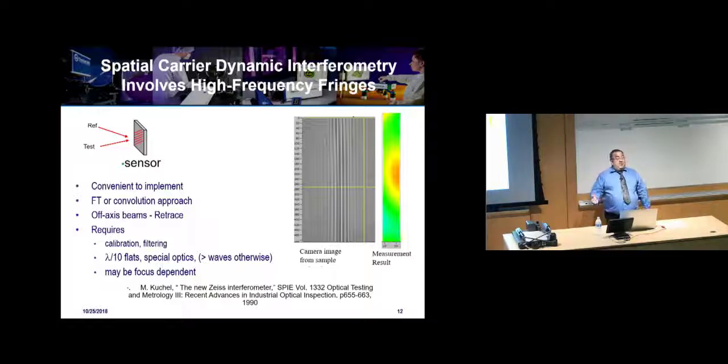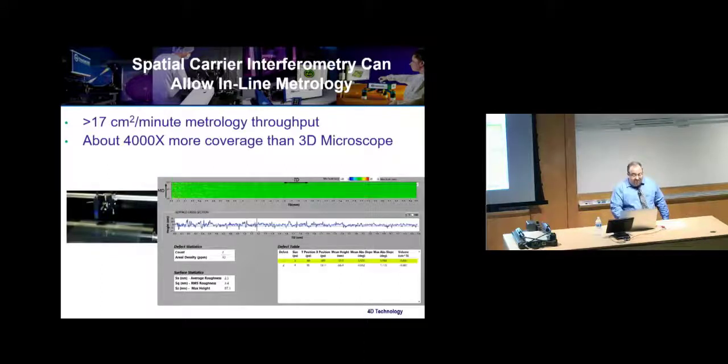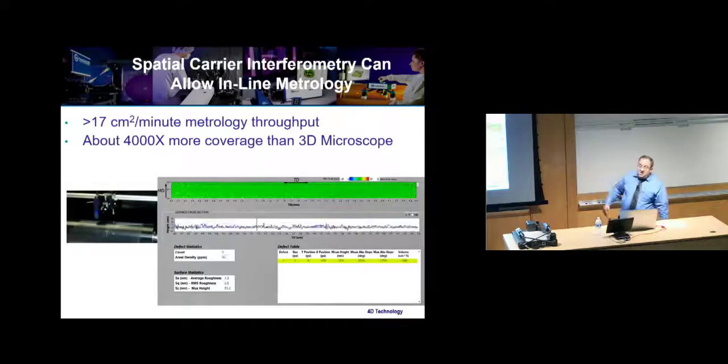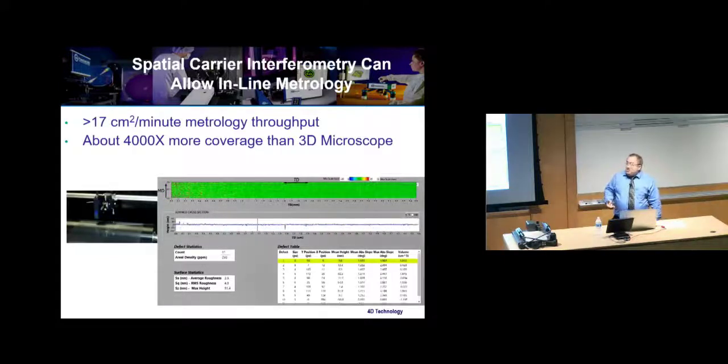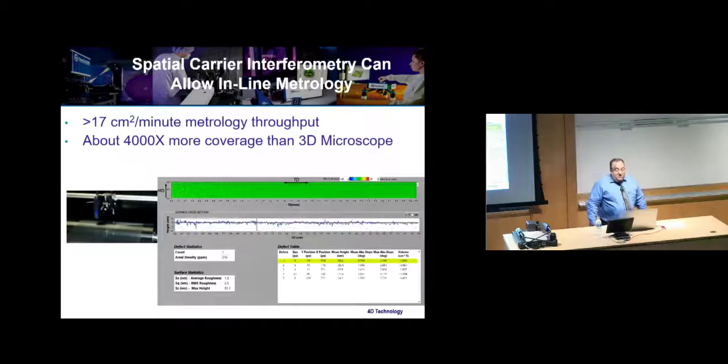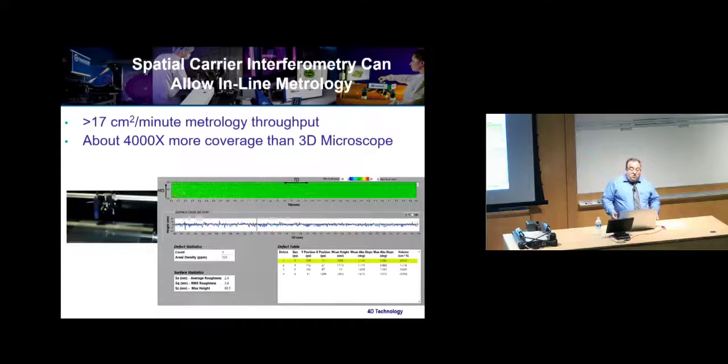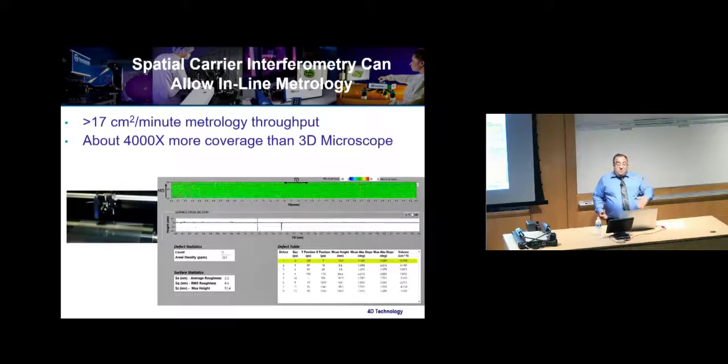There's some tricks here though. Your system has to be designed to perform well at high tilts. Otherwise, you're going to get a lot of aberrations and errors. A lot of times you have specially designed optics. You want higher quality flats. You want to make sure you understand focus dependence and things like that. The technique's been around a long time. It was first commercialized in 1990 by Michael Kuchel at Zeiss. One of the cool things you can do: here's a little interferometer that uses spatial carrier techniques. You can actually mount it over something like a roller that's doing plastic electronics, and you can get a real-time map of the surface as it goes by. People are using this to map defects, do roughness calculations, and things like that. Down here, you see a defect table that's tracking things.